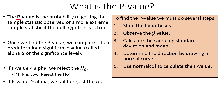So what is the p-value? The p-value is a probability of getting the sample statistic that we observed, or a more extreme sample statistic — farther away — if the null hypothesis is true.